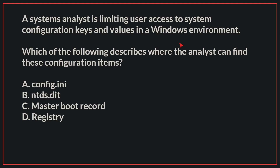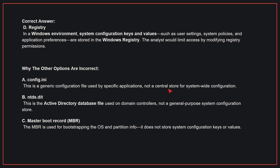A systems analyst is limiting user access to system configuration keys and values in a Windows environment. Which of the following describes where the analyst can find these configuration items? The correct answer is D: the Registry. In a Windows environment, system configuration keys and values — such as user settings, system policies, and application preferences — are stored in the Windows Registry. The analyst would limit access by modifying registry permissions.